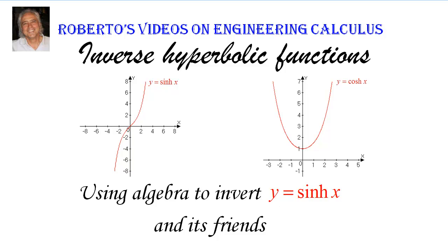When it comes to studying inverse functions, the inverse hyperbolic functions present a very interesting case to study. We have in front of us sinh and cosh — their graphs. We can start by asking ourselves, from the graphs, can we conclude whether the inverse functions exist? If we look at sinh X, we can see that it passes the horizontal line test, and we can use the properties of graphs of inverse functions to see what the graph of the inverse should look like.